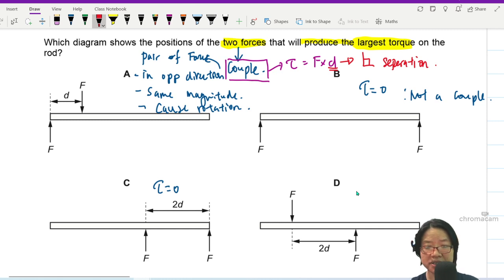So in this case, the one with the greater separation is D. Because this separation is just d, but this separation is 2d.